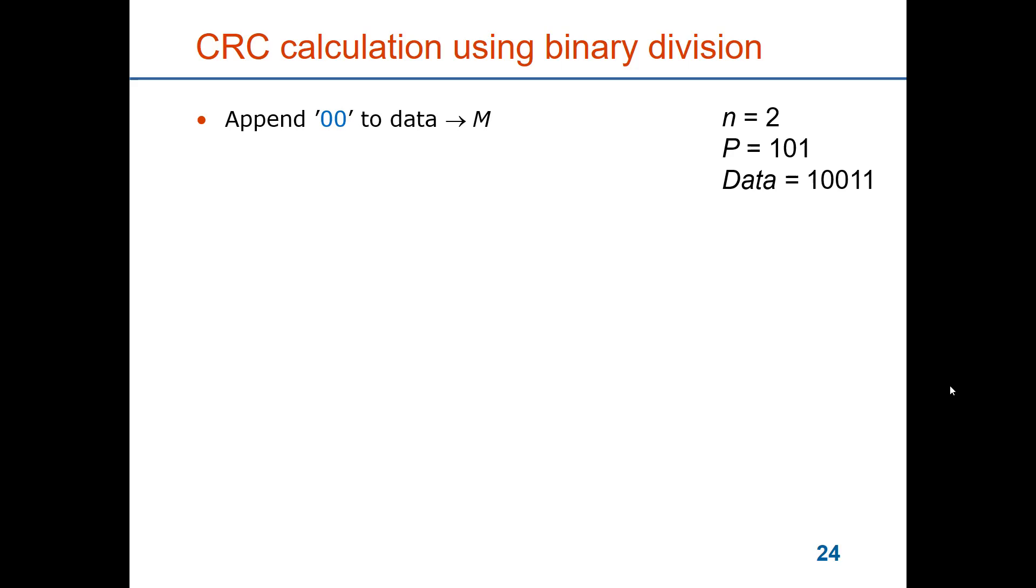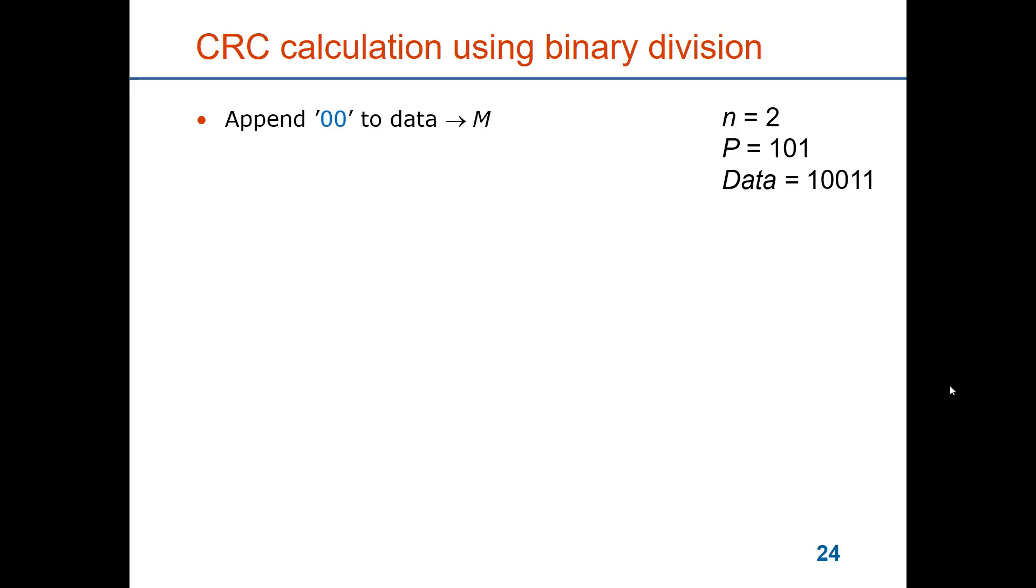So let me show you how to calculate using binary division. We have given generator 101, which means that the redundancy that we should add to the message should be two bits long. So we take first and add two zeros to the data to create the message m. The data is given here as 10011. Now we should compute the remainder of 101100 divided by the generator 101.